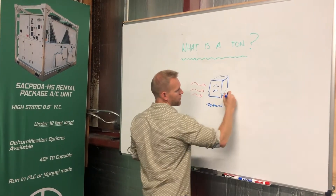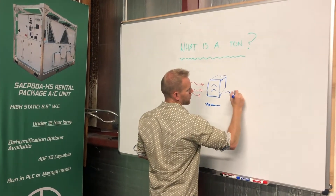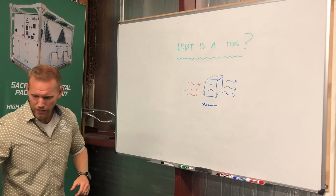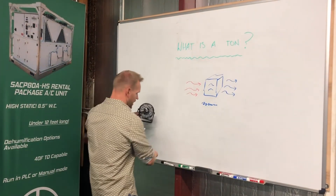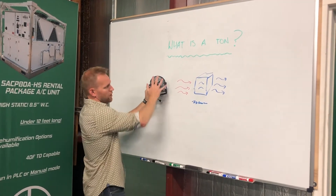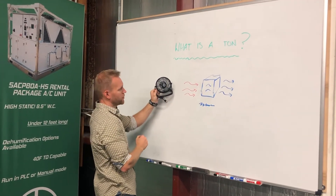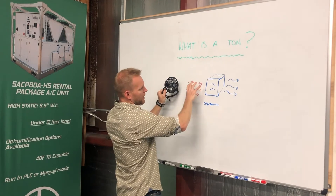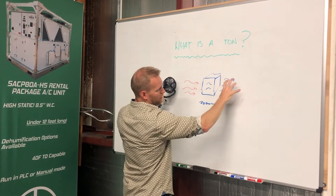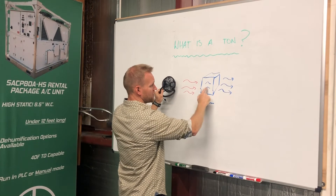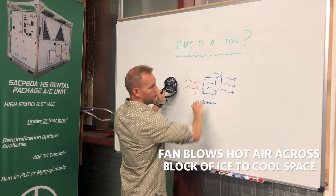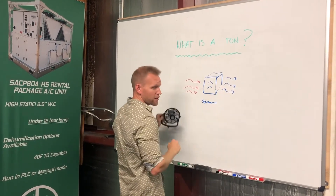Some of that ice would change phase from a solid to a liquid — it would become water — and we'd have cold air coming out of the other side. Very early air conditioning practices: we'd have a fan, like our nice Smart Family fan here, blowing hot air over a block of ice. That air would reject some of the heat as the ice changed phase from solid to liquid, and we'd get much colder air that we could take through the space.